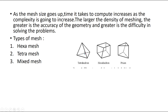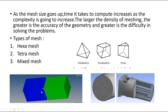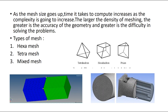If you choose Hexamesh you will get hexahedral elements, and if you choose a mixed mesh you will get a combination. This is tetramesh and hexamesh — they are types of element categories used in meshing.